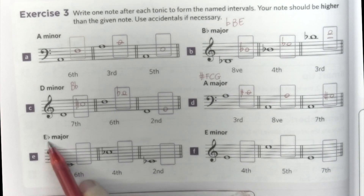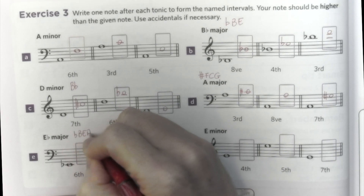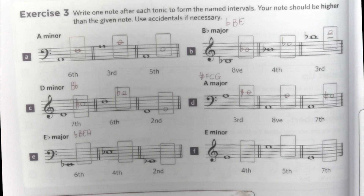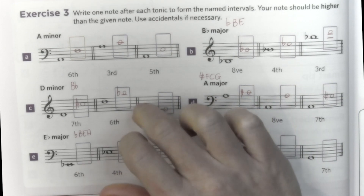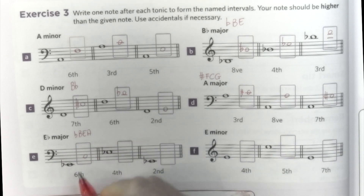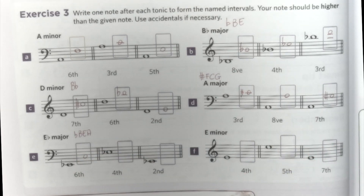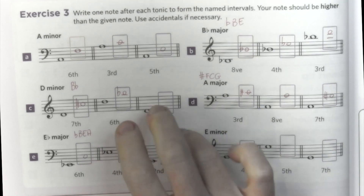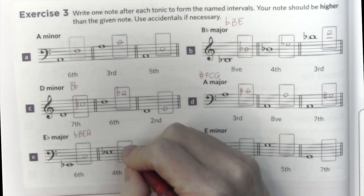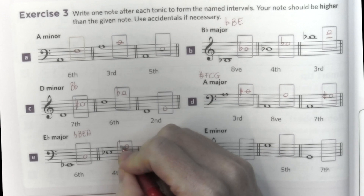E flat major — E flat is the penultimate flat, so the flats are B, Mi, and La. A sixth from Mi flat: Mi, Fa, Sol, La, Si, Do. Do is here. Is it flat? No, we can relax. A fourth from Mi is Mi, Fa, Sol, La — now La. Is it flat? Yes, flat.